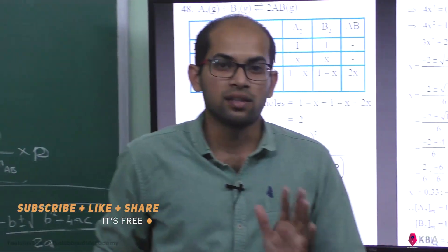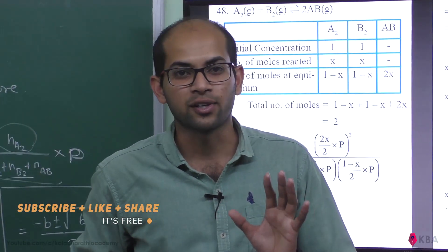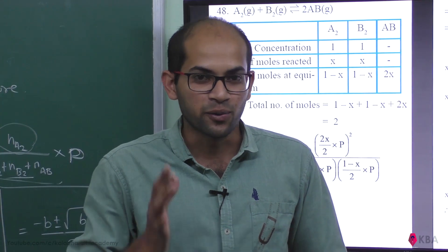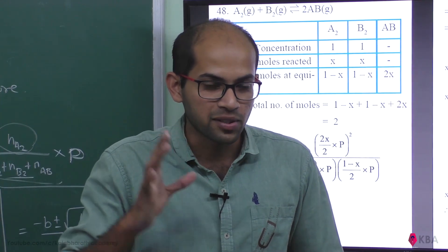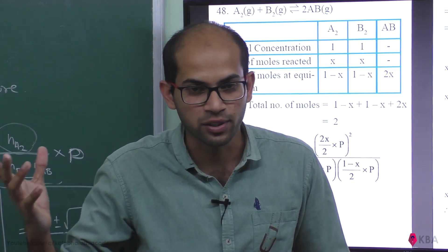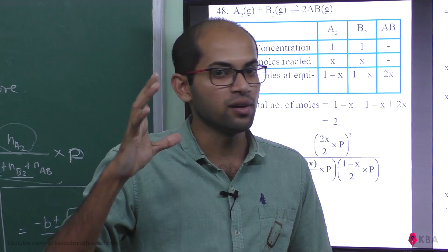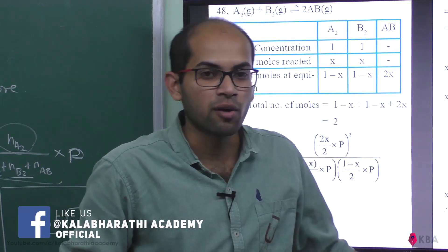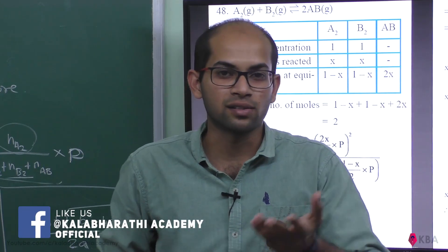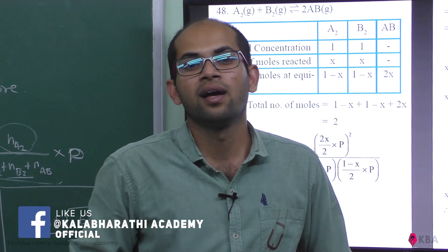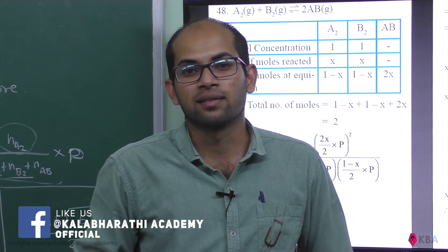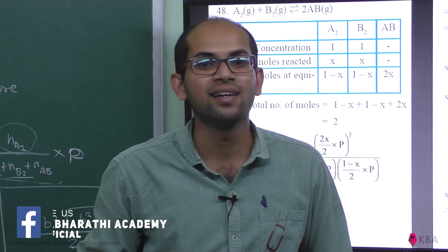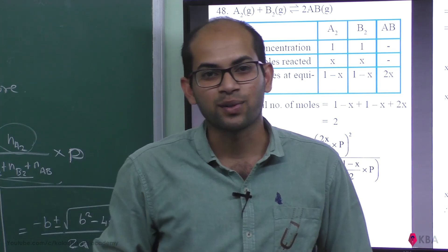Therefore, x equals 0.33. Moles of A₂ at equilibrium: 1 minus 0.33 equals 0.67. Moles of B₂: 1 minus 0.33 equals 0.67. Moles of AB: 2 times 0.33 equals 0.66. Thanks for watching, students.